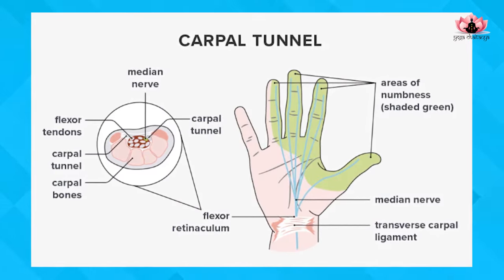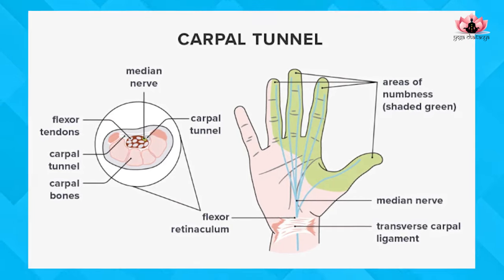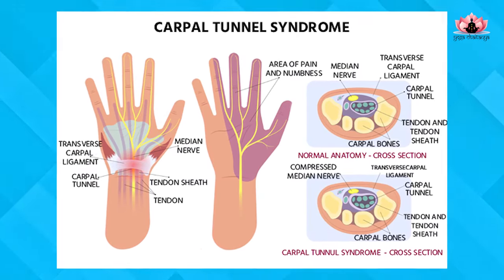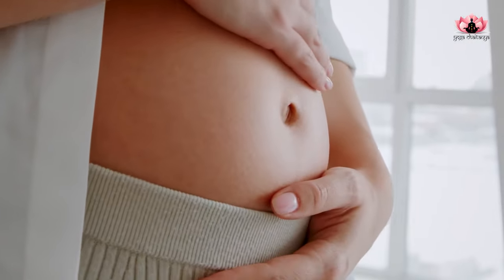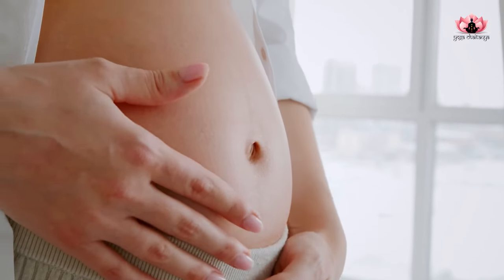Precautions and contraindications for Kuber Mudra: If you have joint pain or arthritis, this mudra can give additional strain on your joints and should be avoided. If you are struggling with carpal tunnel syndrome, it can cause additional pressure on the medial nerve and should be avoided. Pregnant women should also avoid this mudra as it involves holding the hand in a certain position for an extended period.